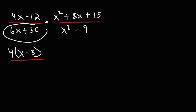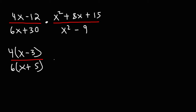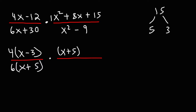Now, we could do something similar with 6x plus 30. The GCF is 6. 6x divided by 6 is x. 30 divided by 6 is 5. Now on the right, we have a trinomial with a leading coefficient of 1. So to factor x squared plus 8x plus 15, what we need to do is find two numbers that multiply to 15 but add to the middle coefficient 8. So this is going to be 5 and 3. 5 times 3 is 15, 5 plus 3 is 8. So we can write this as x plus 5 times x plus 3.